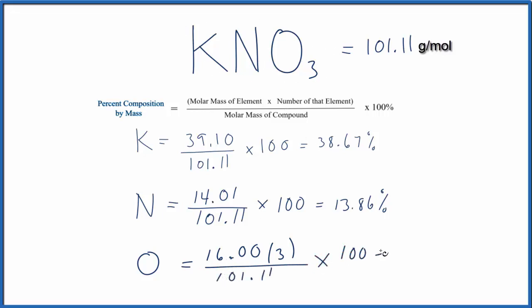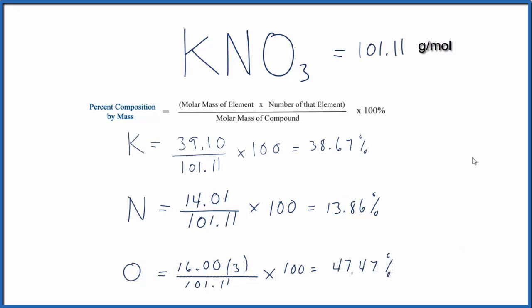Times 100 and we find that the percent mass is 47.47 percent. If you add up all of these percentages, it should be very close to 100 percent, might be off by 0.01 or 0.02 depending on how your periodic table rounded.